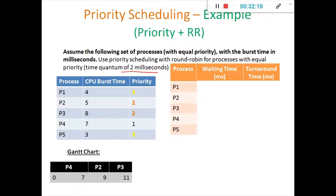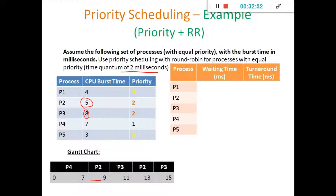9 plus 2 equals 11, then again it goes back to process P2 because it has completed only 2 milliseconds here. Remaining 3 milliseconds are there for process P2; similarly, remaining 6 milliseconds are there for process P3. So until it gets completed this circular fashion will repeat. Again it moves to P2: 11 plus 2 equals 13. It executes for P2, then moves to P3: 13 plus 2 equals 15.